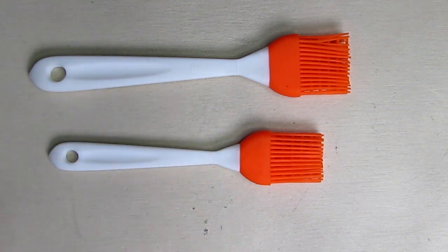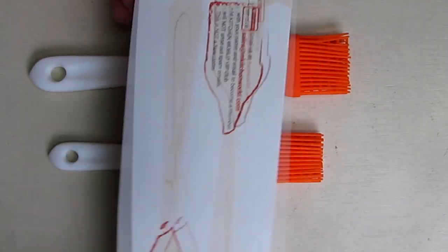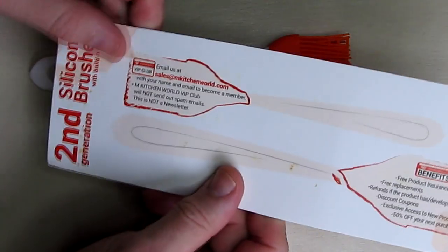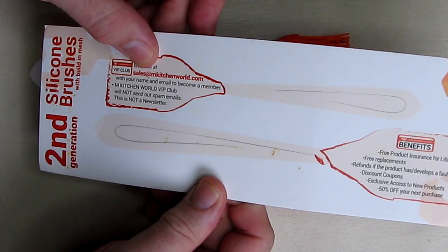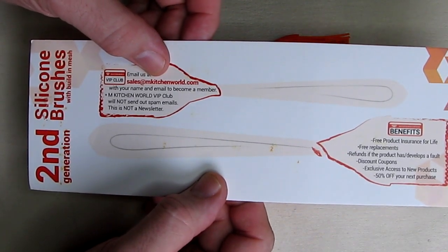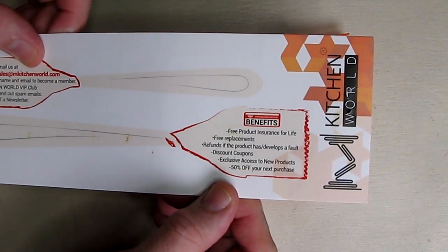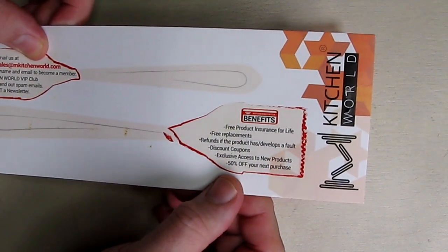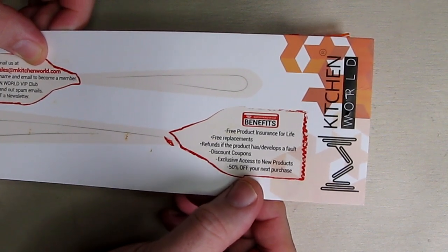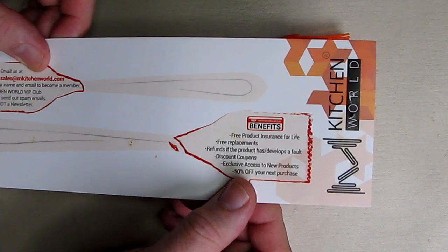This company has a 100% lifetime guarantee. If you look at the packaging, you can go to sales at mkitchenworld.com and register. Then you get nice benefits: free product replacement for life, 50% off your next purchase, and other benefits to being part of this club.